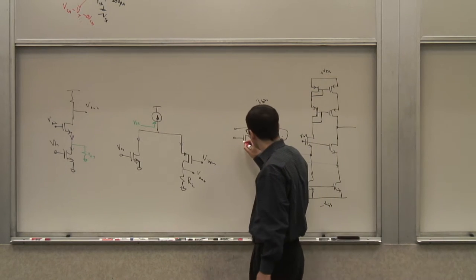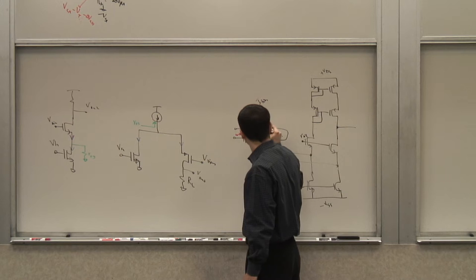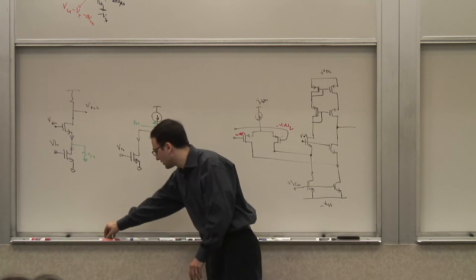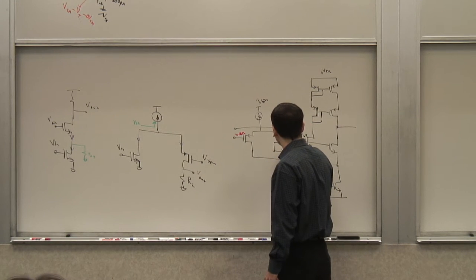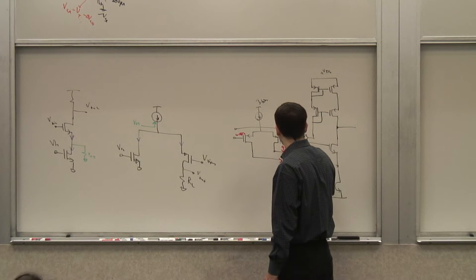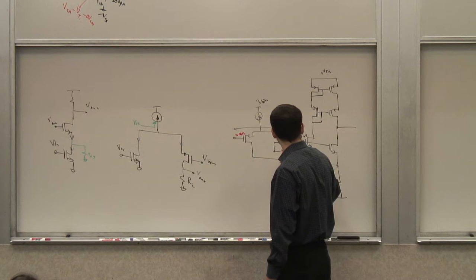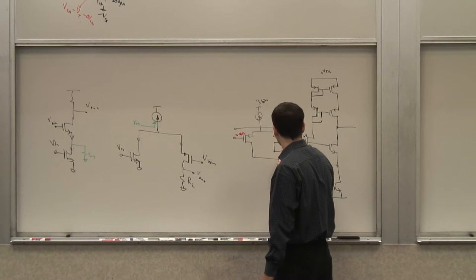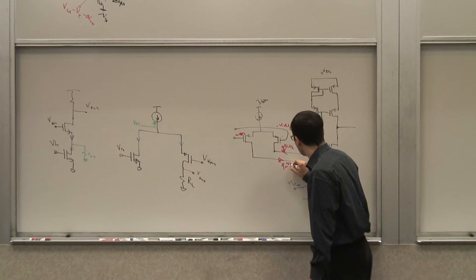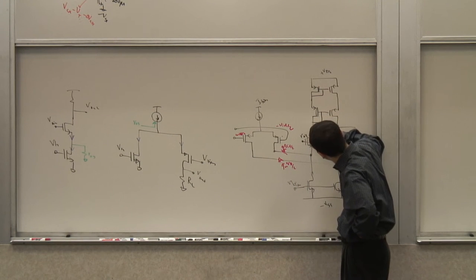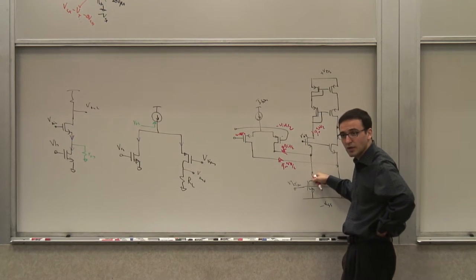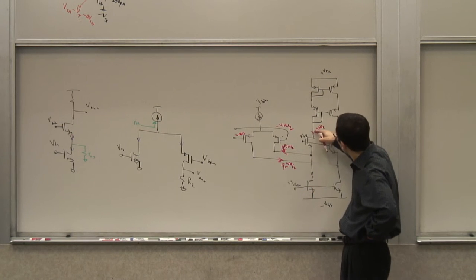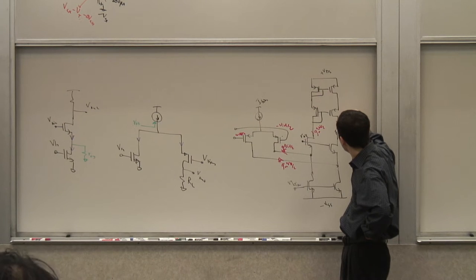How do we determine the gain? Let's say we have a differential input. So we have VID and minus VID, the input, over 2, VID, minus VID over 2, plus VID over 2. And now that corresponds to currents being basically generally going in, which is Gm VID over 2 and minus Gm VID over 2.